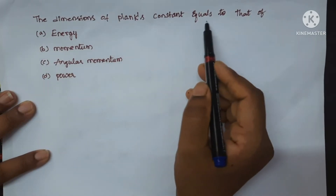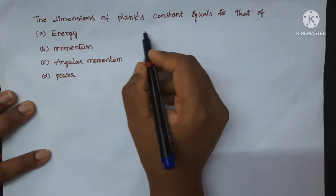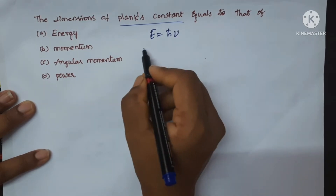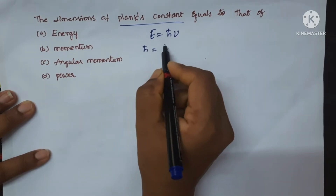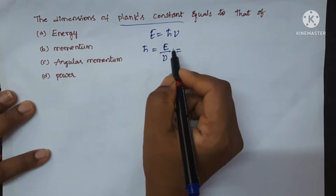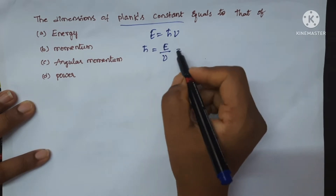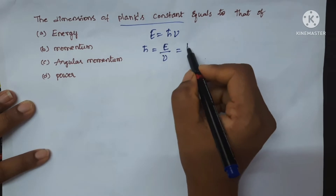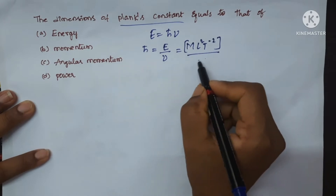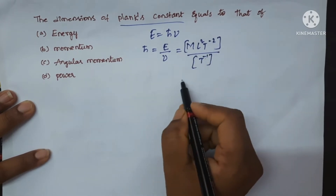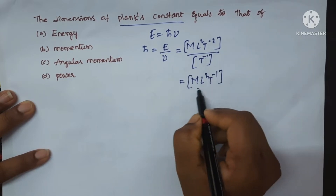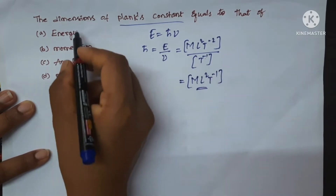The dimensions of Planck's constant equals to which option? First, we will find the dimensions of Planck's constant using the formula E equal to H nu. Here H is Planck's constant, which is equal to E upon nu. Nu is the frequency. Now E is the energy — the dimensions of energy are M L square T power minus 2, upon frequency which is T power minus 1.